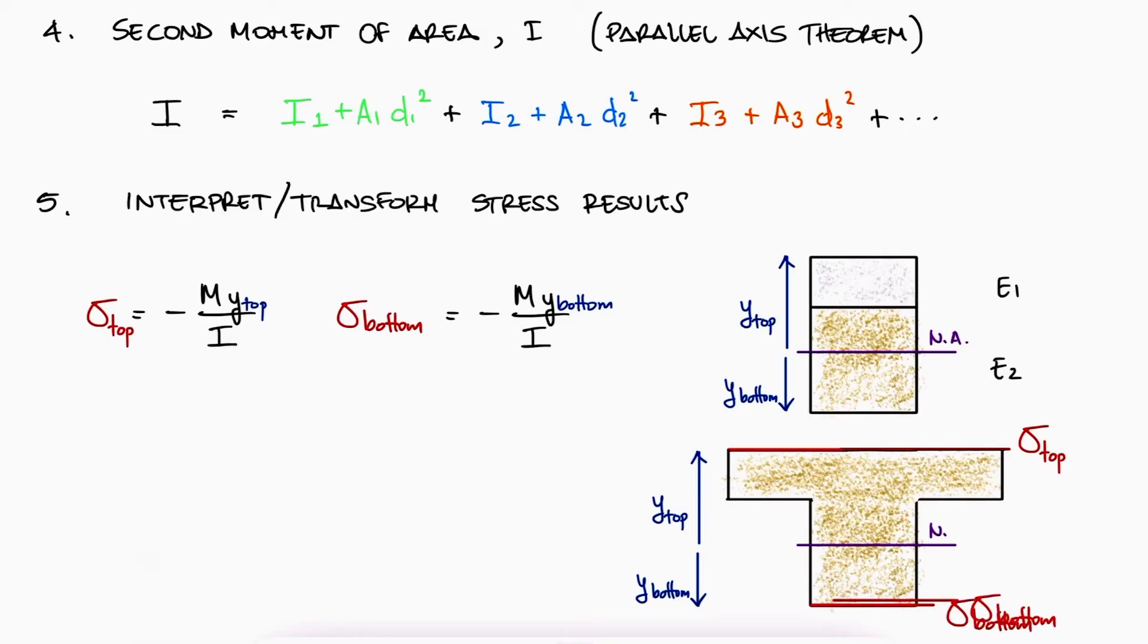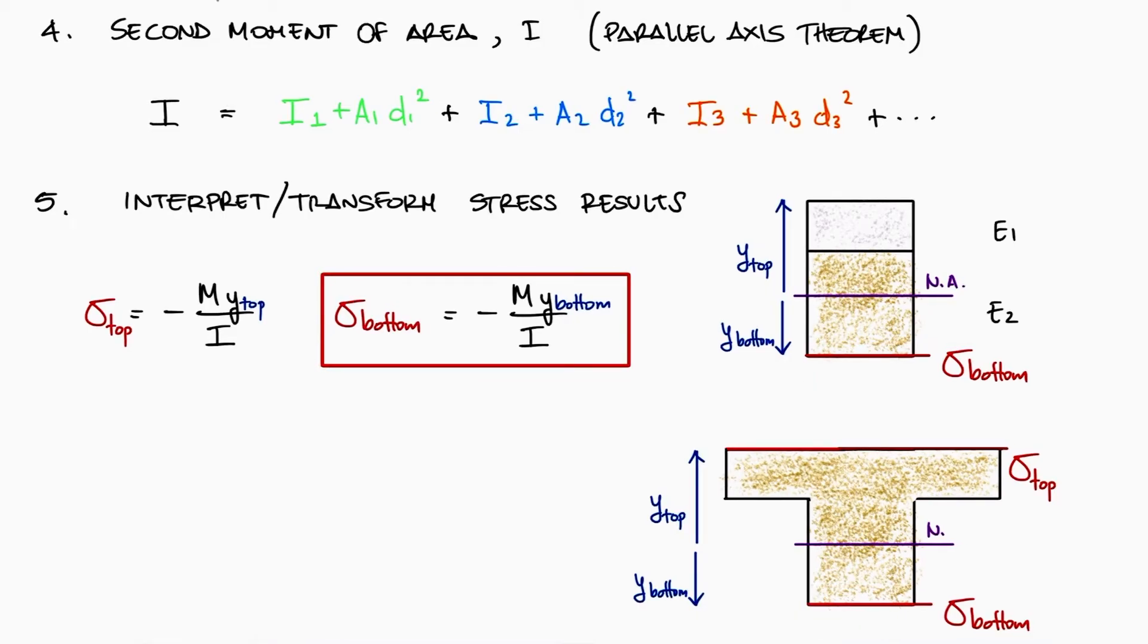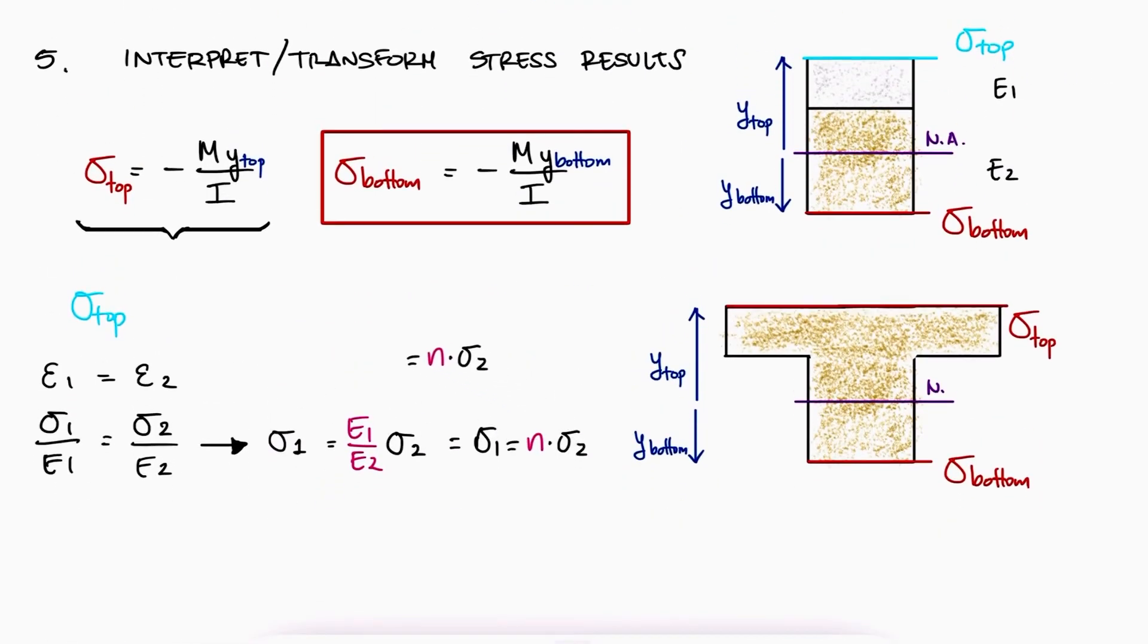On the other hand, if the top or the bottom was originally made of material 1, like it is the case for the top in this example, then we need to transform the stress back to a material 1 type of stress. Using the same starting point we used before, where the strains should remain the same before and after the transformation, we see that the stress in material 1 is equal to the stress in the new, transformed material, times the elastic moduli ratio, the exact same one we used before, not the reciprocal. The actual stress at the top where the material was originally material 1 would be equal to the elastic modulus ratio times what we previously calculated, which means that to go back to the actual stress of the original material, we multiply the stress in the new material times n.